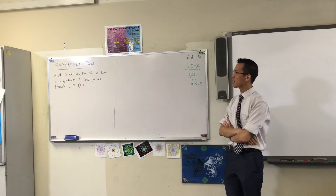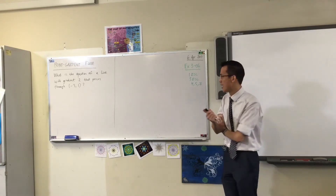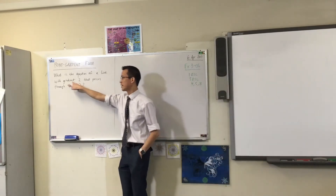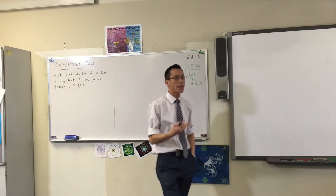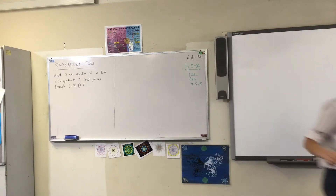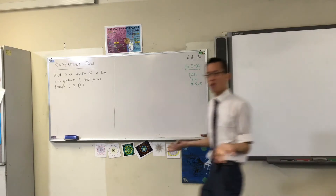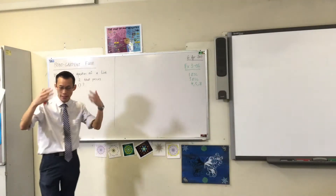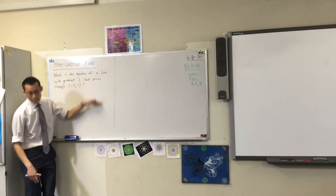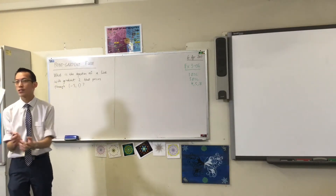I'm interested in trying to work out: what if we know some characteristics about the line, like its gradient and a place it goes through — can we work out its equation from that information? I want to set this up first by getting a picture of what it would look like, so that when we get to an equation at the end, we can check whether it sounds reasonable.